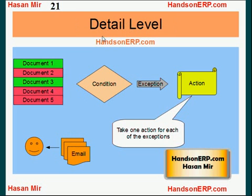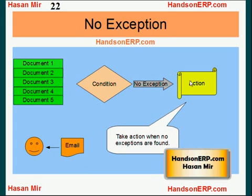In the case of a detail level, one action takes place for each exception found. Using the same example, there are three exceptions found, so the action is executed once for each exception — meaning the user receives three different emails. In each email, you can display the document number and other details. You also have the no exception action level. If you define an action with level no exception, this action is executed when no exceptions are found. Even if one exception is found, this action will not be executed. In this example, there are no exceptions found, so an email is sent to the user saying no exceptions found.